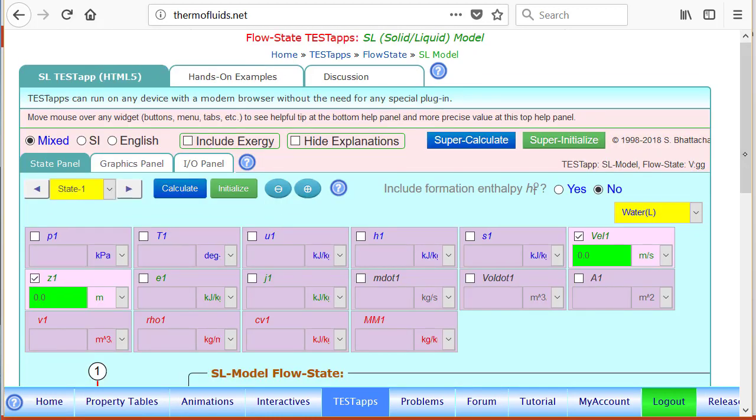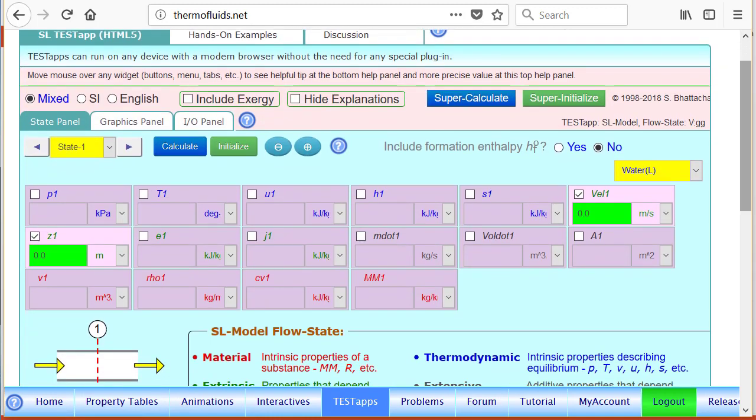Okay. So, as before, you can see that state 1 is the default state. Water is the default fluid, so we don't have to change any of that. Inlet state, information given is 100 kPa, temperature is given to us.